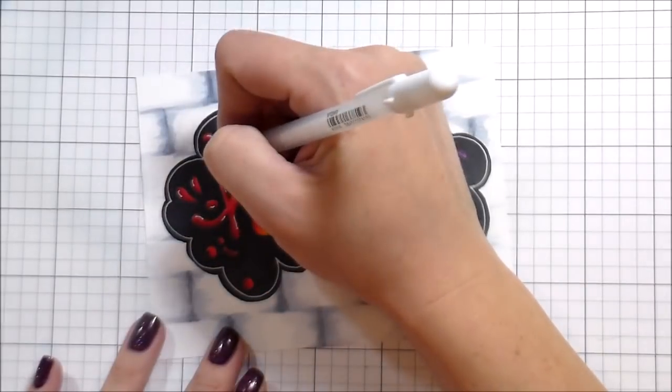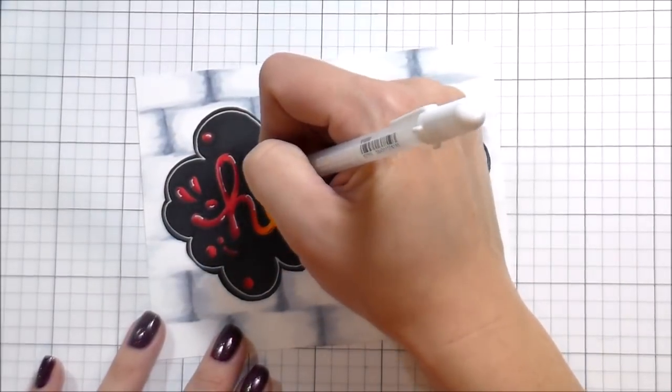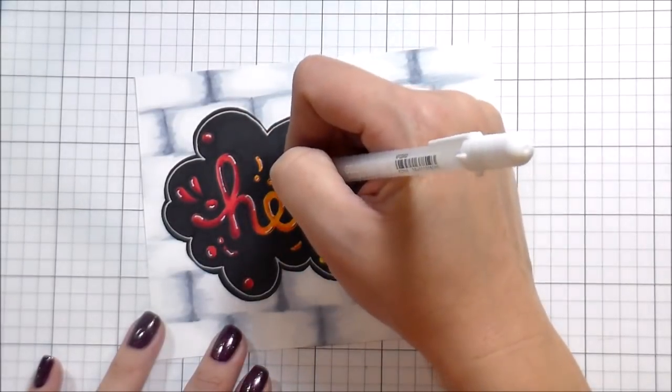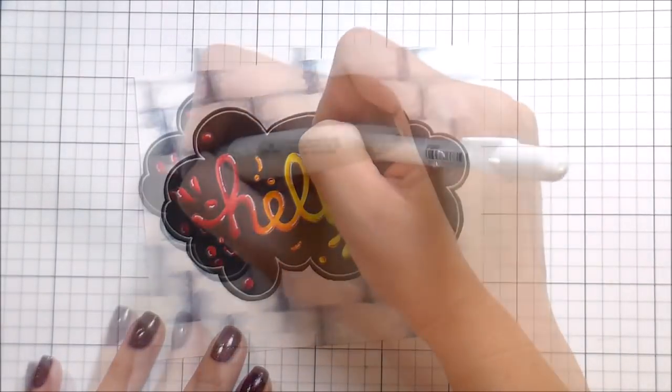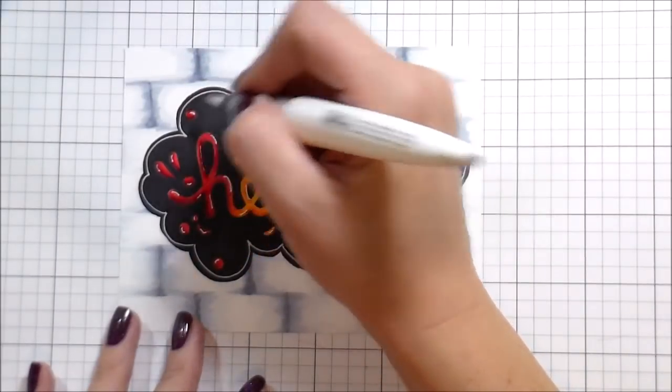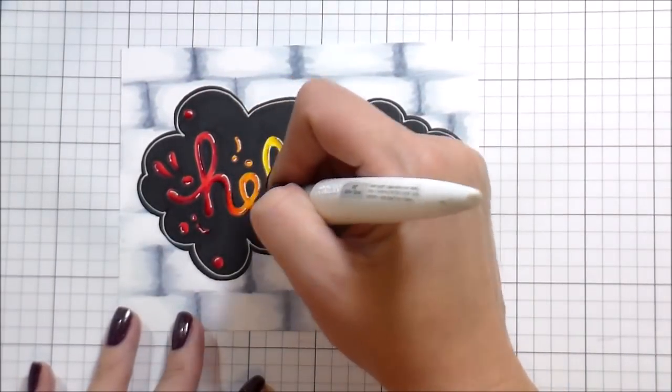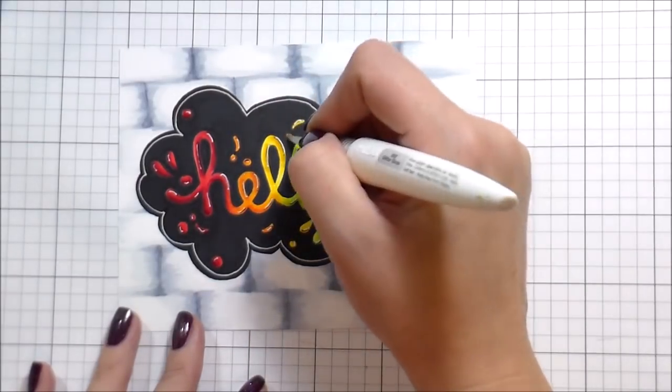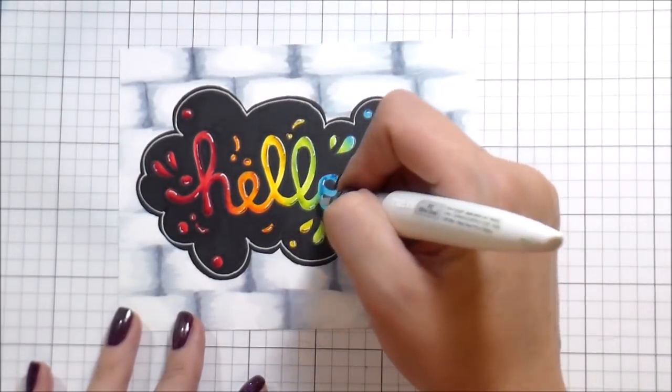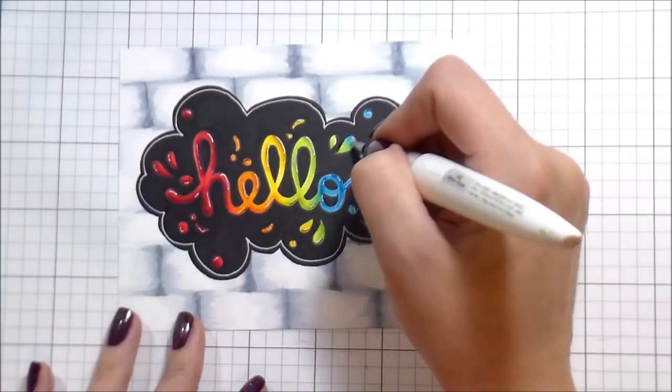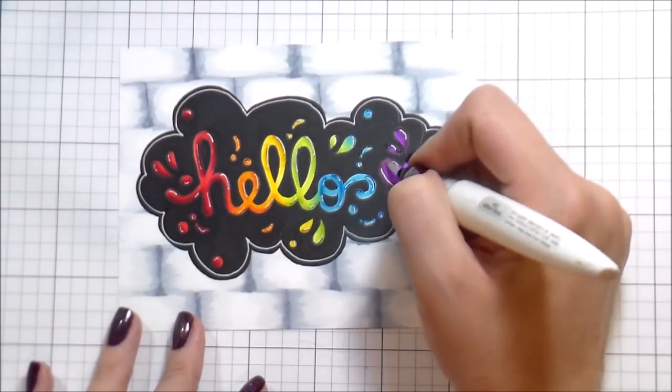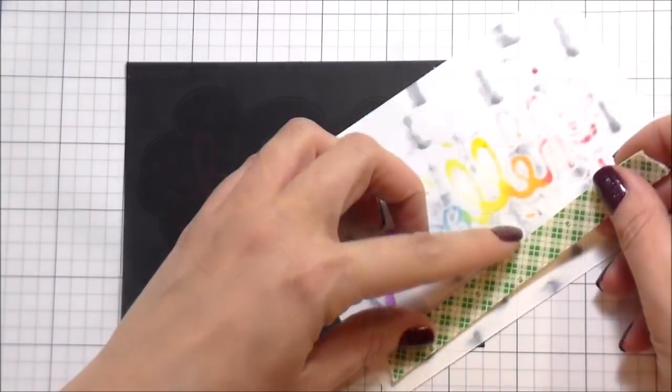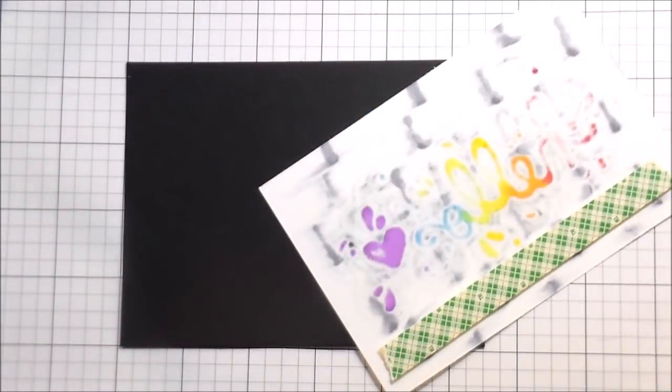Here I'm using that same gel pen to just add highlights to the letters and the splatters, and then I'm going in with just a glitter pen. Because honestly, if I was a graffiti artist, I would always have a can of glitter spray paint to make sure that my stuff was shimmery, because I just couldn't leave it like that.